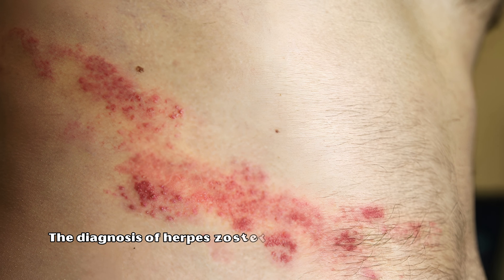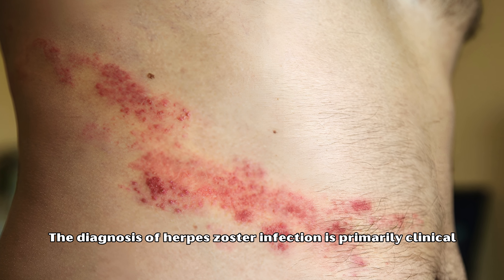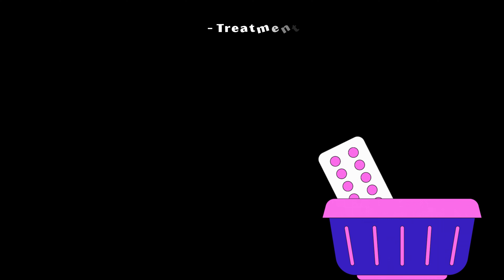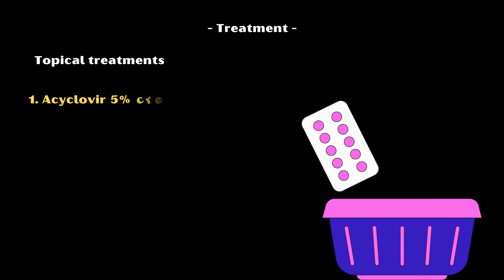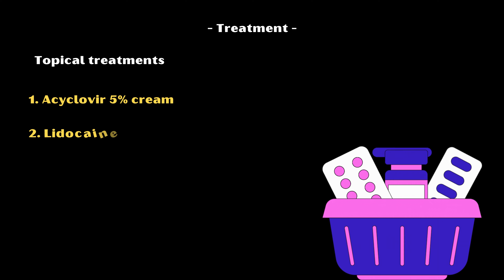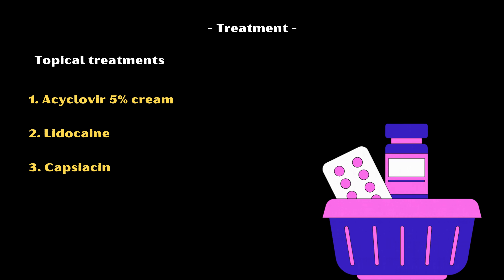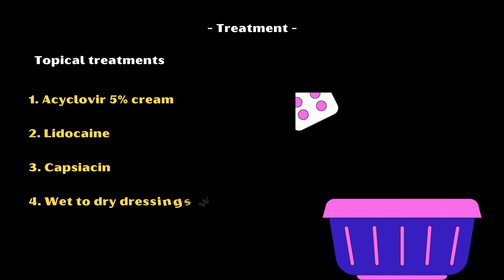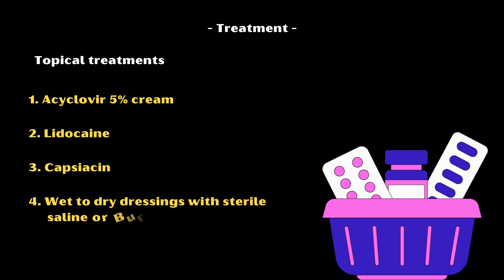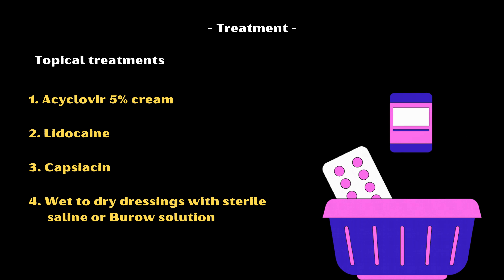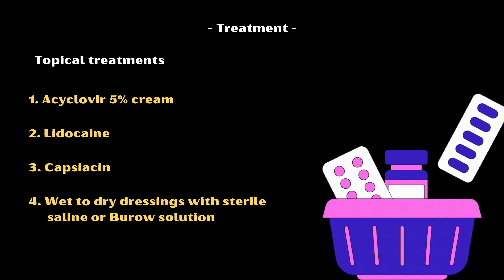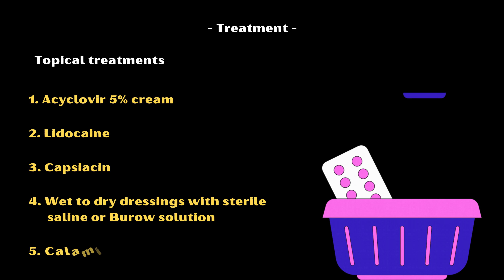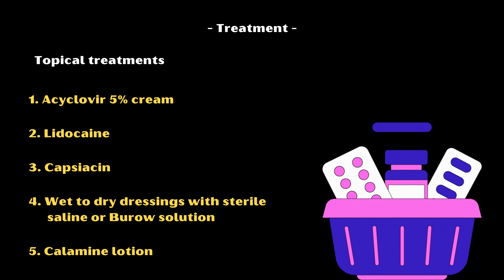The diagnosis of herpes zoster infection is primarily clinical. Treatment includes both topical agents and systemic agents. Topical treatments include acyclovir 5% cream, lidocaine, and capsaicin. Additionally, wet-to-dry dressings with sterile saline solution or Burow's solution should be applied to the affected area for 30 to 60 minutes, 4 to 6 times a day. Calamine lotion can be used as an antipruritic agent.